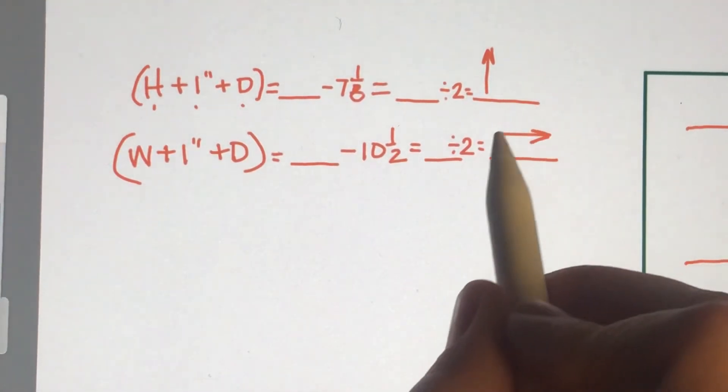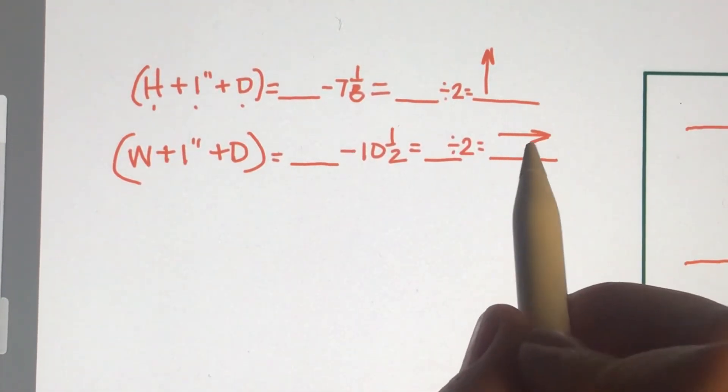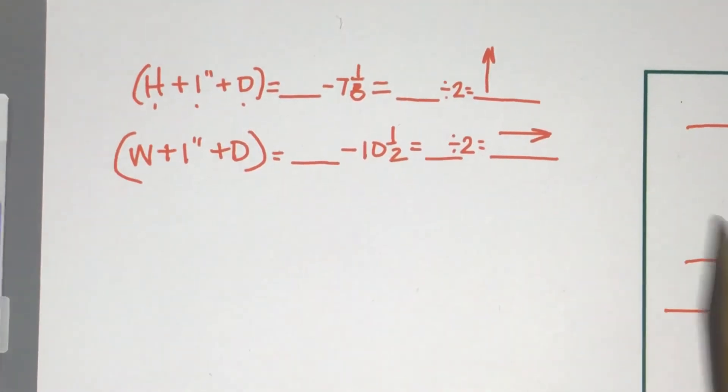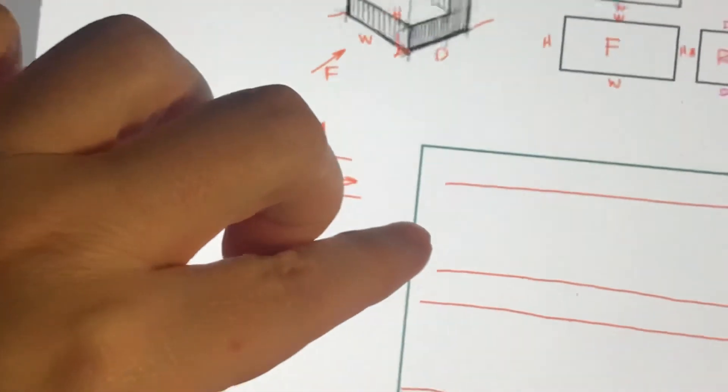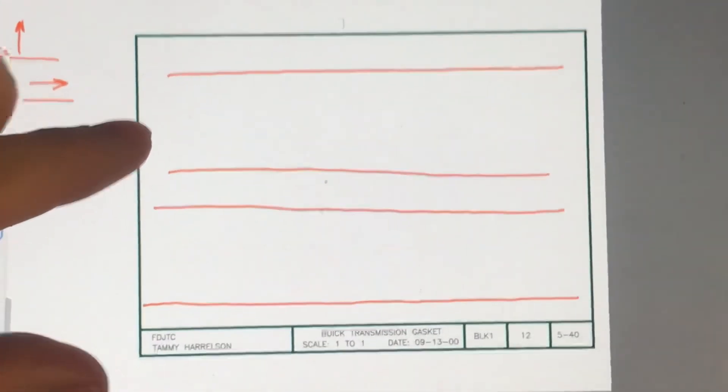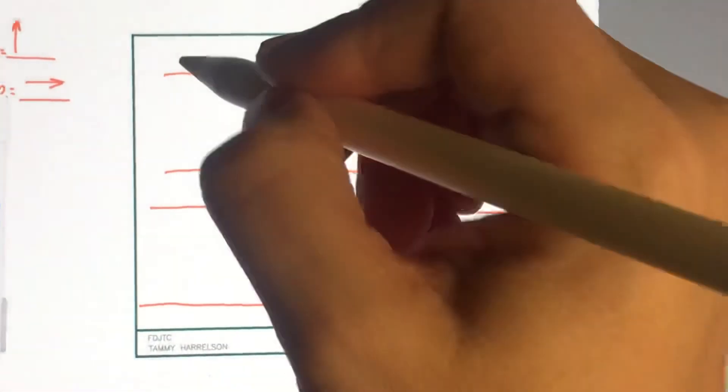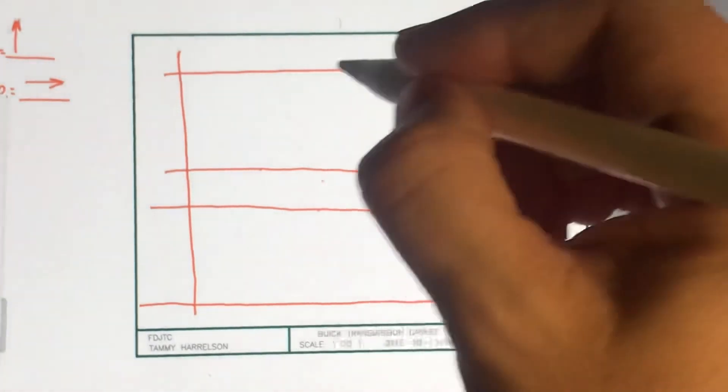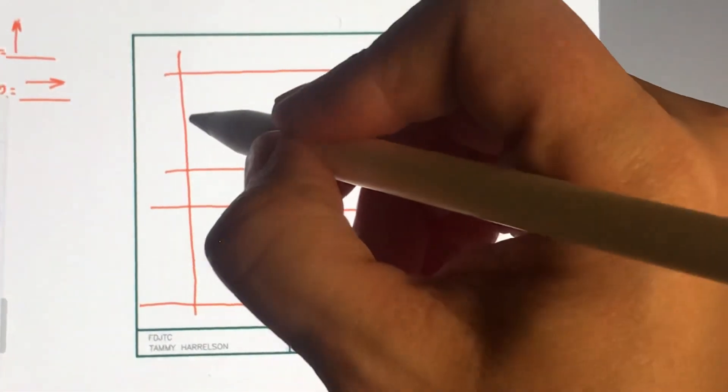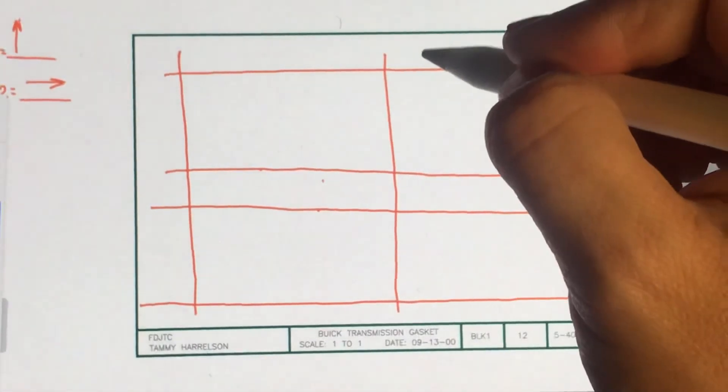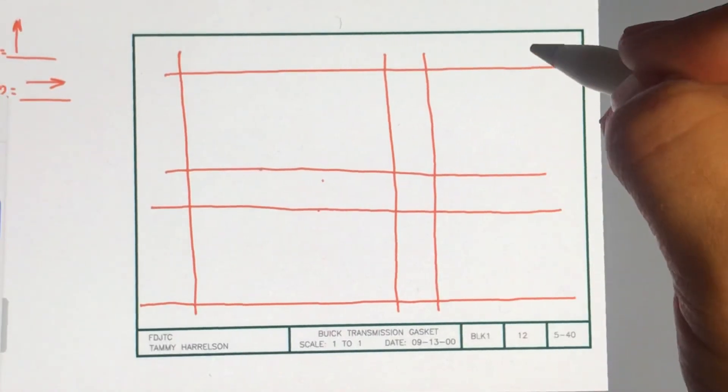So once I get the answer, I offset the answer. Then I offset the numbers in the formula in order. Offset the width, the one inch spacing, and then the depth.